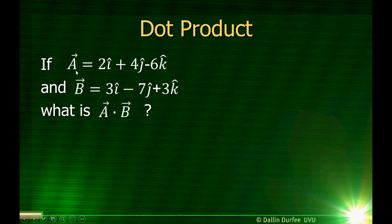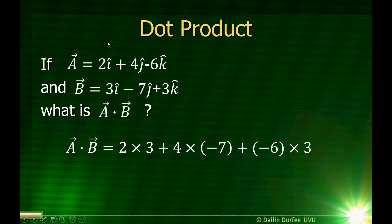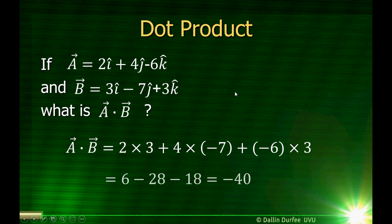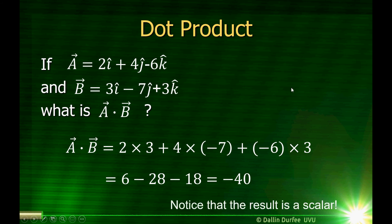Here are some examples. To take the dot product of a and b, I multiply the x components together, plus the y components 4 and minus 7 multiplied together, plus the z components negative 6 and 3 multiplied together. So 2 times 3 is 6, 4 times negative 7 is negative 28, negative 6 times 3 is negative 18 — add them all together and I get minus 40. Notice the result is a scalar, which is why another name for the dot product is the scalar product.